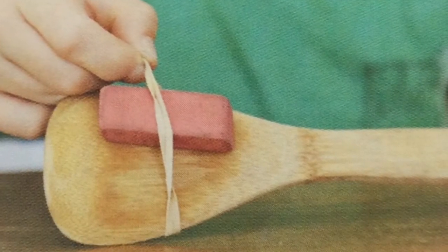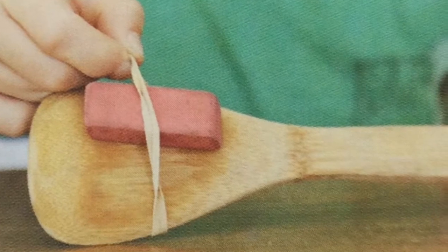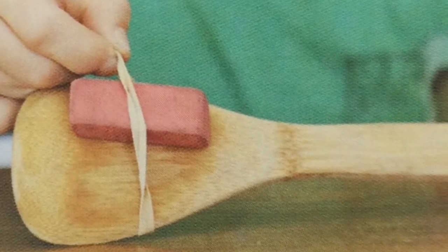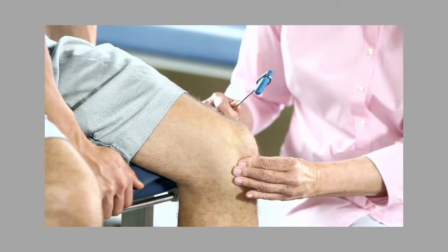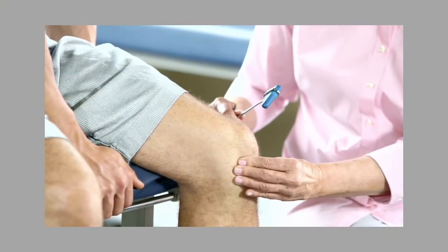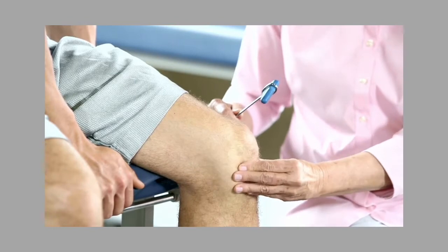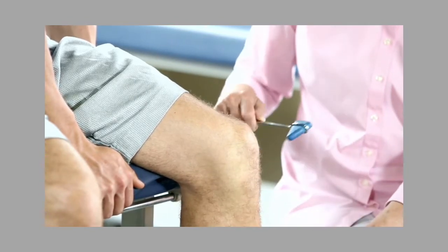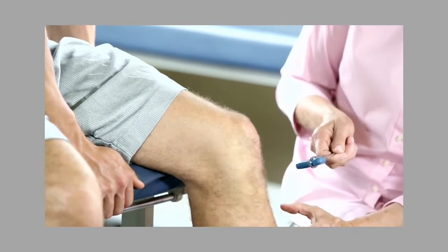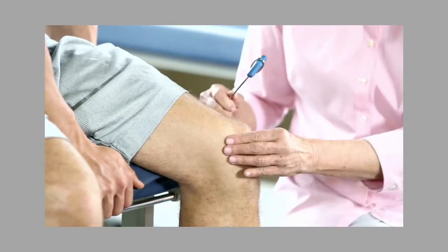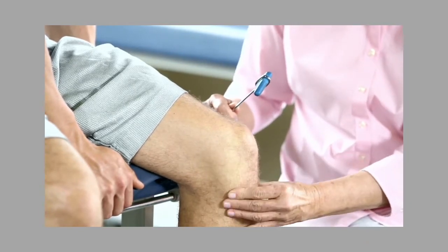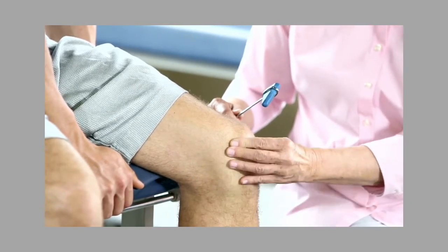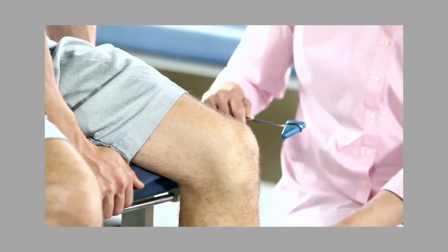Make a reflex hammer by attaching the eraser to the spoon with the rubber band as shown in the picture. Have your test subjects sit in a chair so that his or her legs can swing freely. Feel your test subject's knee below the kneecap. Notice the location of the soft spot. Tap the soft spot below the test subject's knee with the reflex hammer and observe the response of the leg.